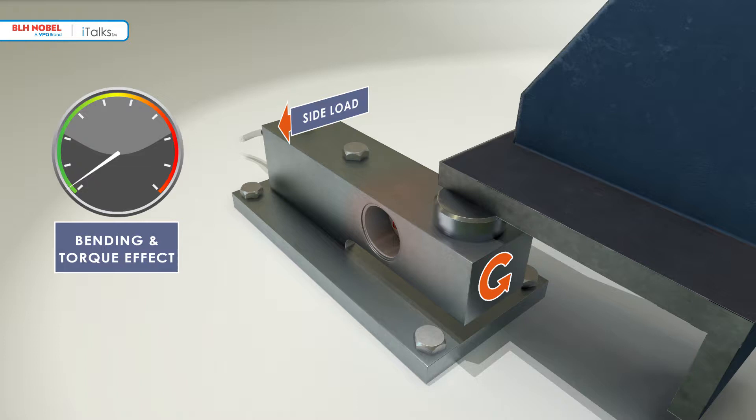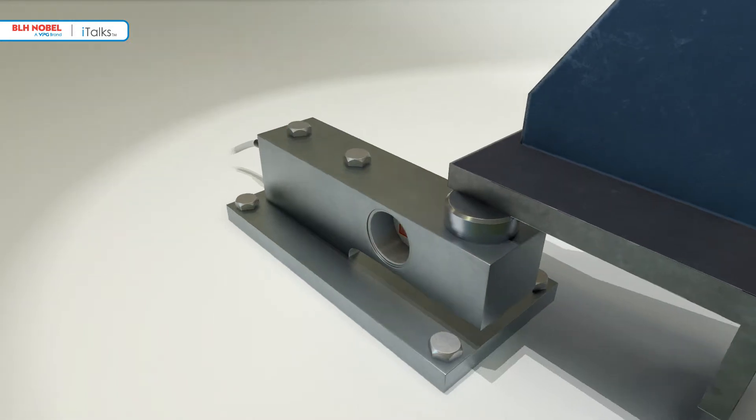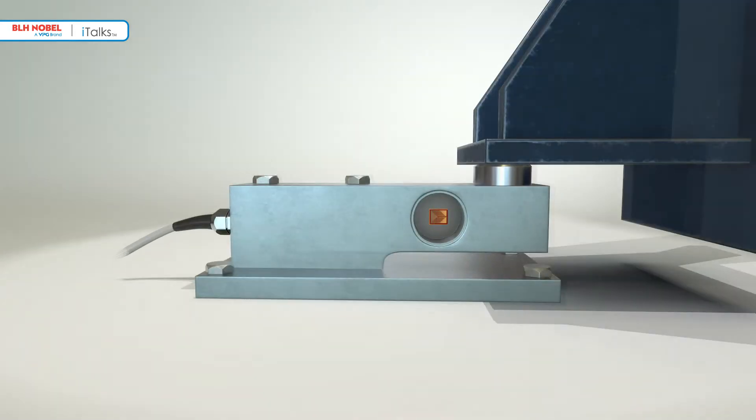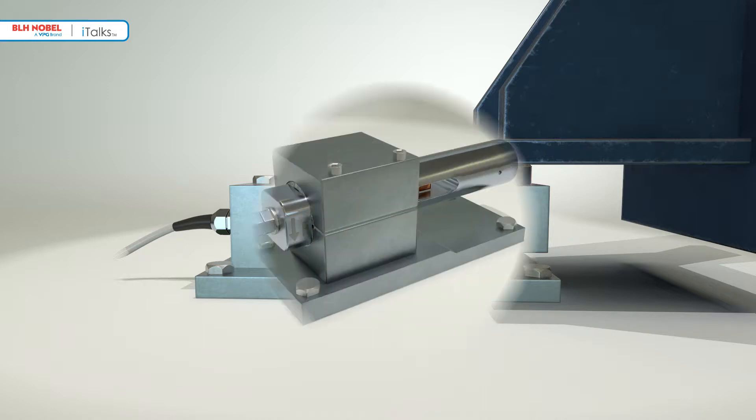Simple shear force load cells work well in ideal conditions and most have excellent specifications on paper. BLH and Nobel Weighing Systems invented a unique load cell that continues to deliver great performance even when conditions are far from ideal. We call it the KISS load cell.